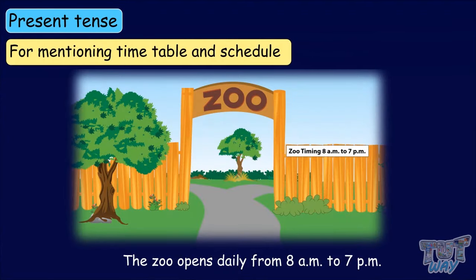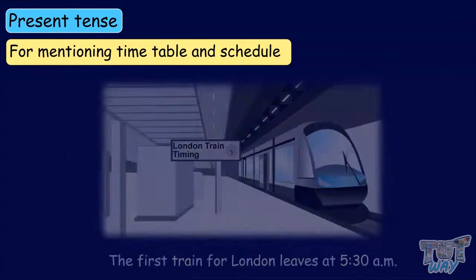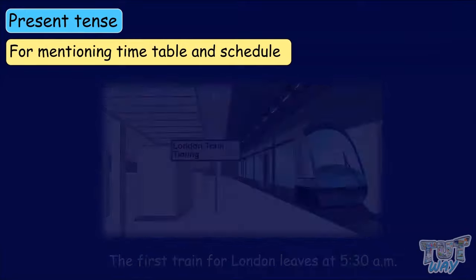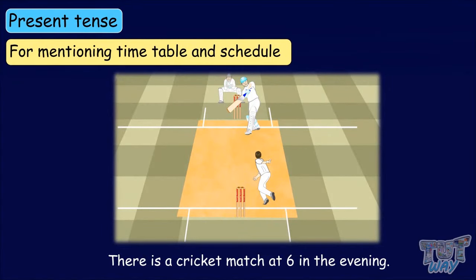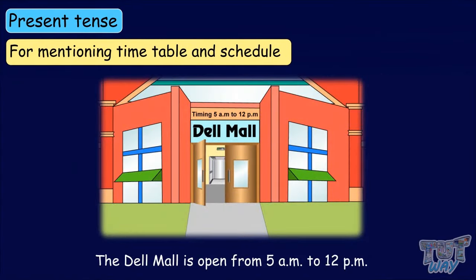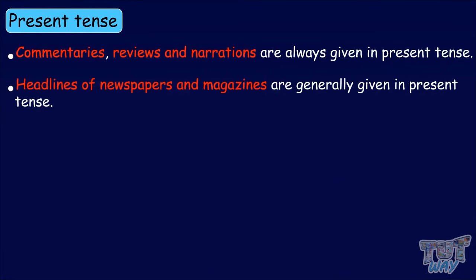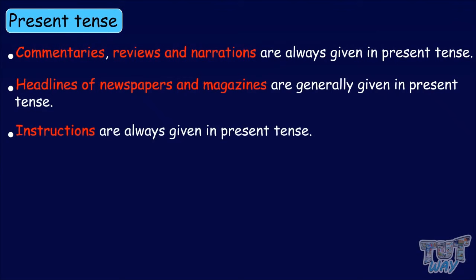For example: 'The zoo opens daily from 8 to 7.' 'The first train for London leaves at 5:30 am.' 'There is a cricket match at 6 in the evening.' 'The Dell Mall is open from 5 a.m. to 12 p.m.' Commentaries, reviews and narrations are always given in present tense. Headlines of newspapers and magazines are generally given in present tense. Instructions are always given in present tense.